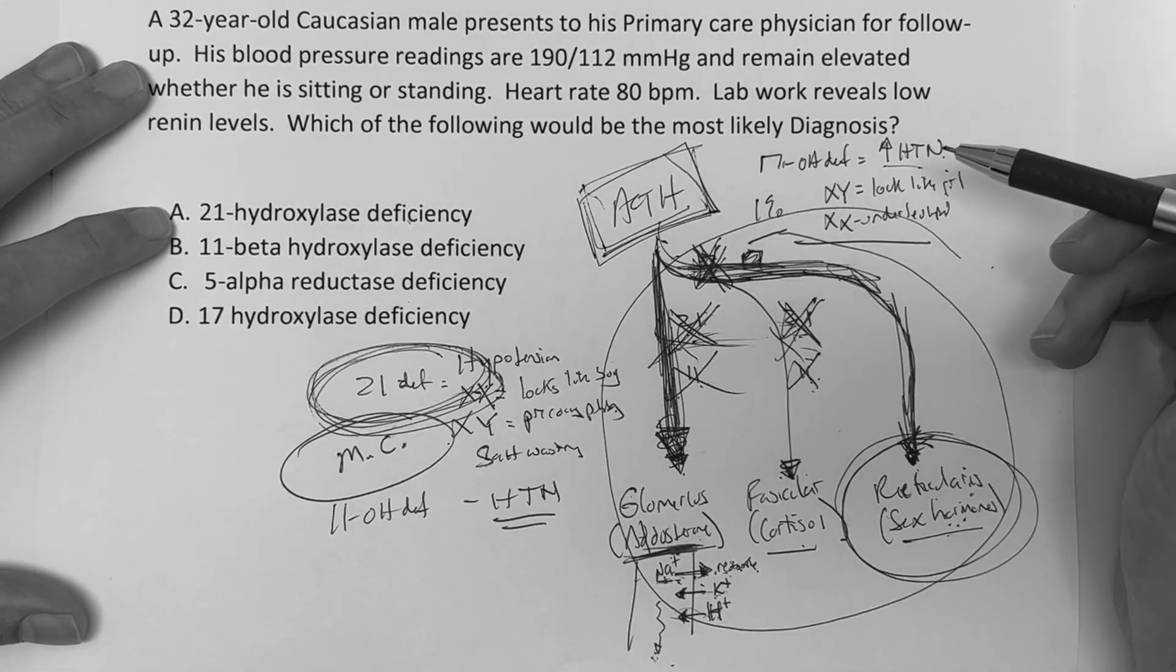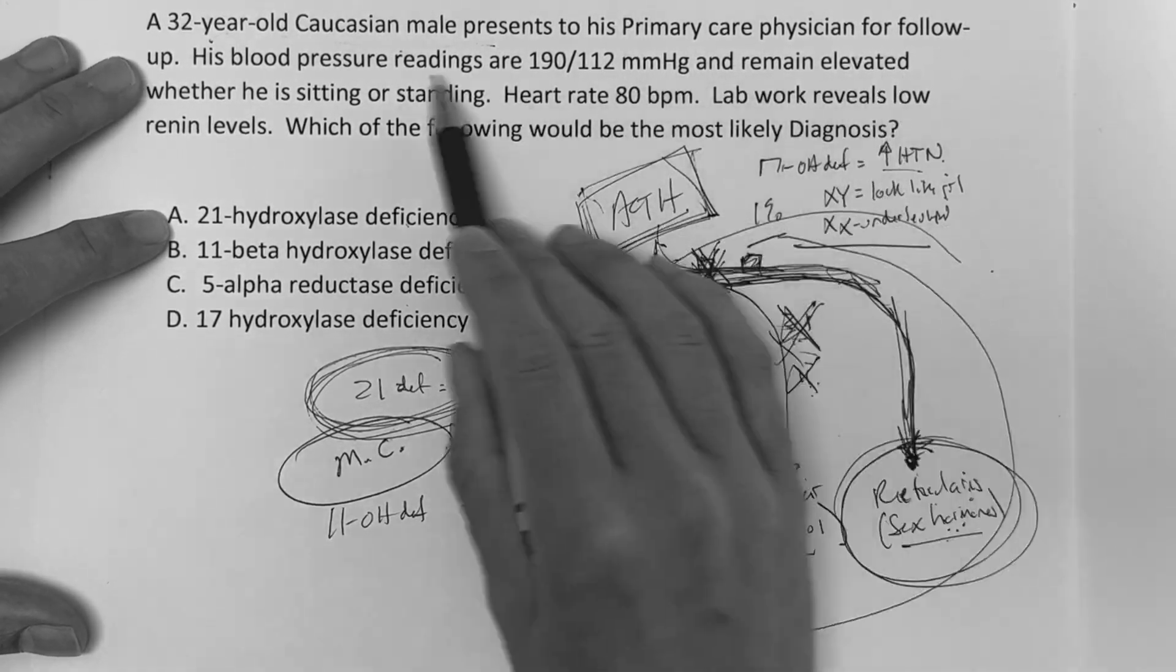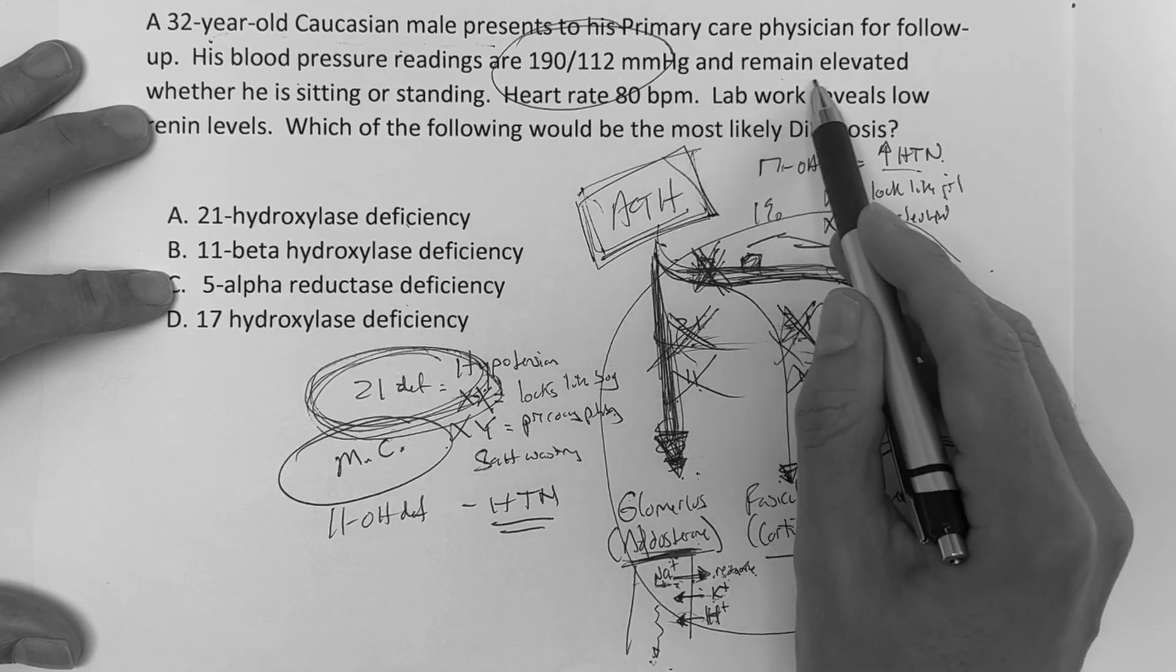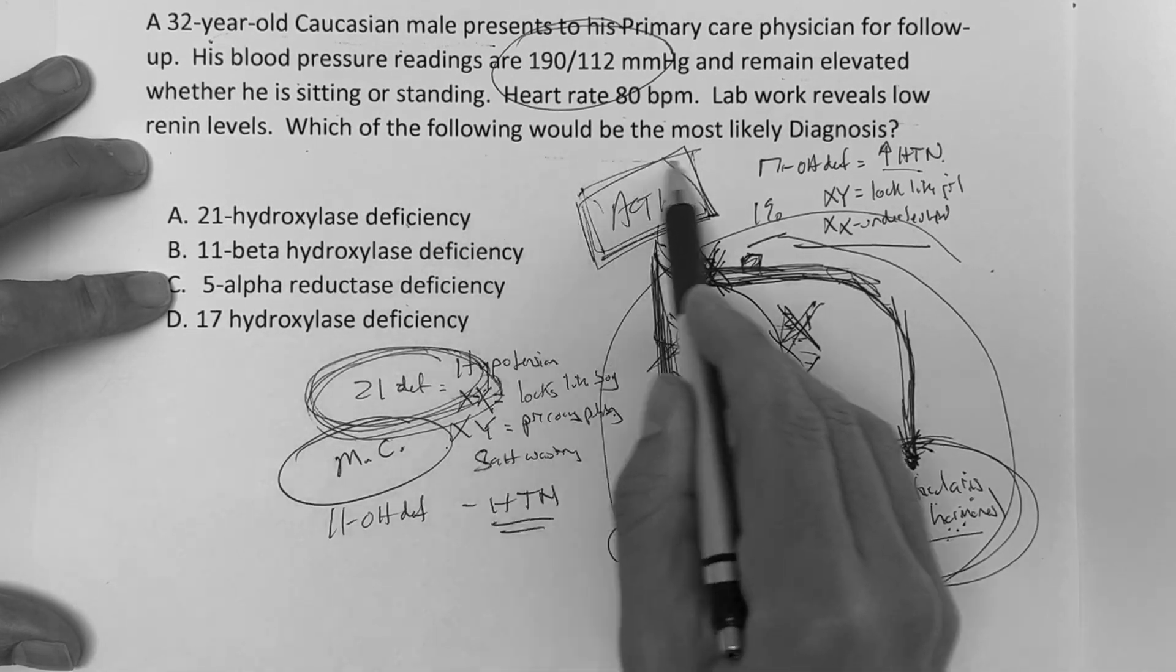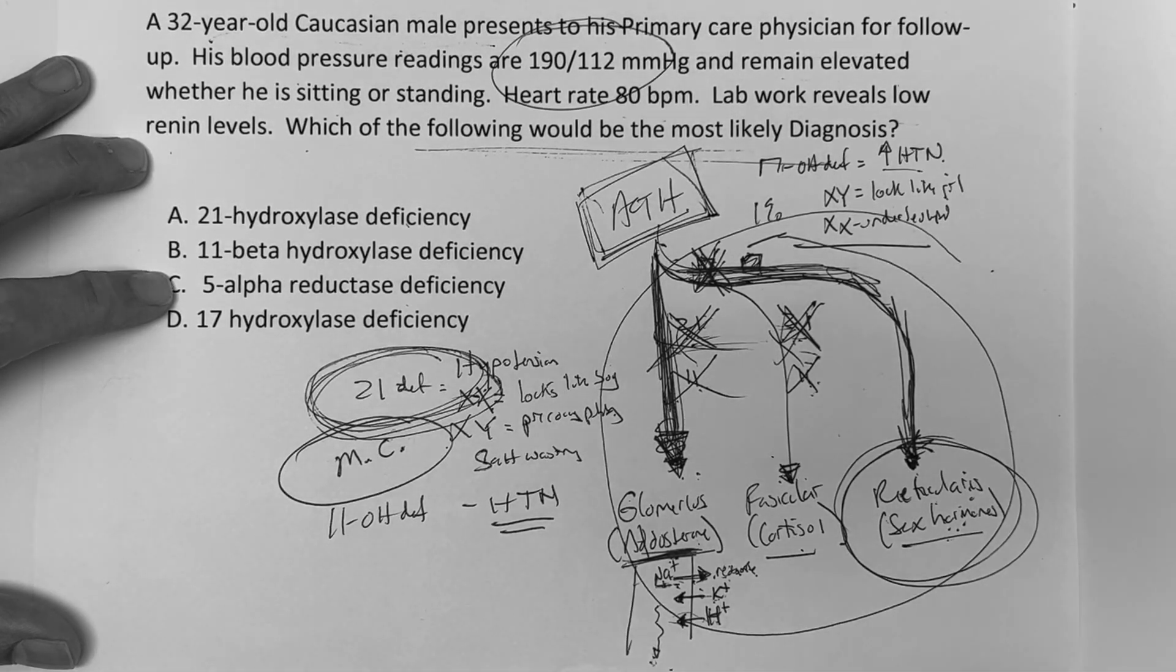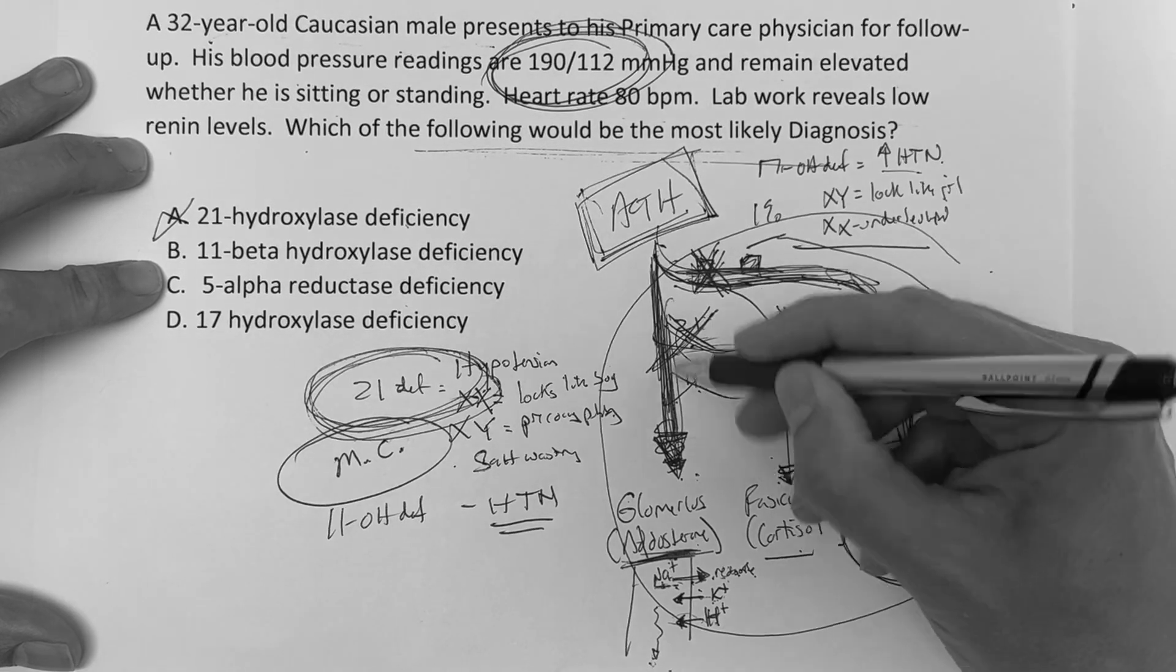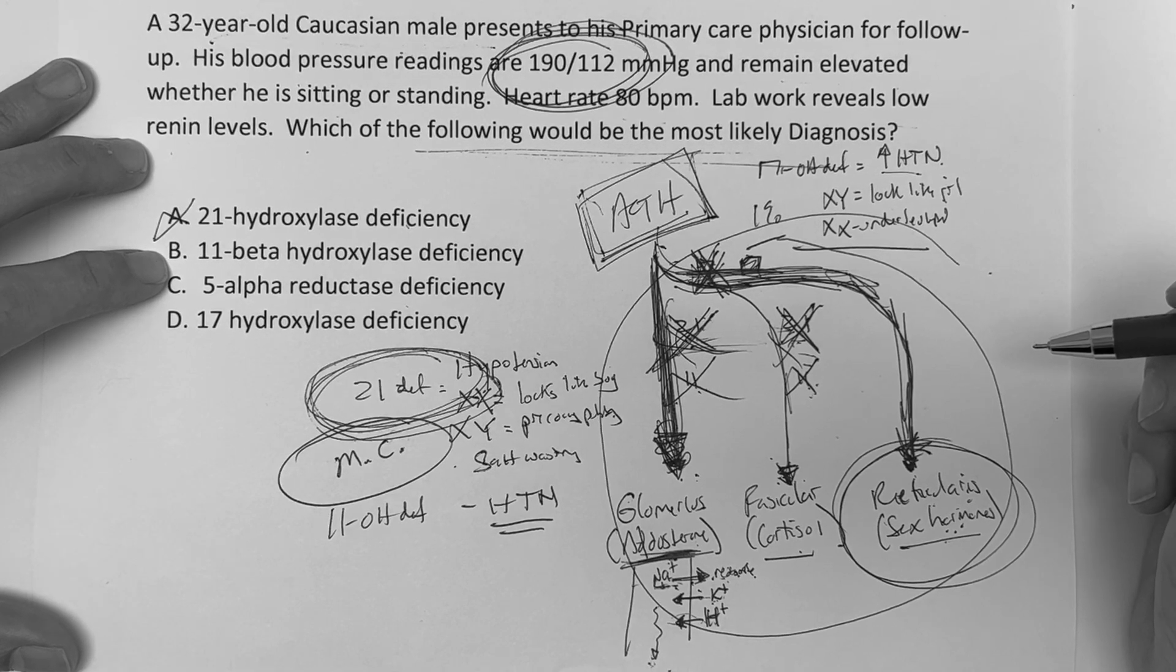So in this situation, it basically says, 32-year-old Caucasian male presents his primary care. The blood pressures are elevated. So if the blood pressures are elevated, I know that I'm coming down this way. And remain, whether he's sitting or standing, heart rate's this. Lab work reveals low renin levels, which the following would be the most likely diagnosis. The most likely diagnosis. Well, we can eliminate 21, right? Because we said that would be more of a hypotension. This guy's got a hypertension. So things are getting pushed this way.